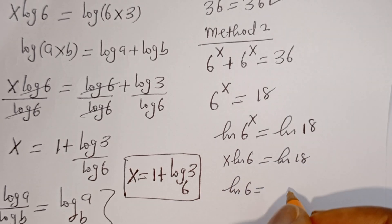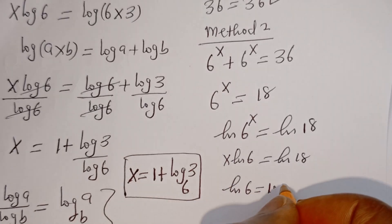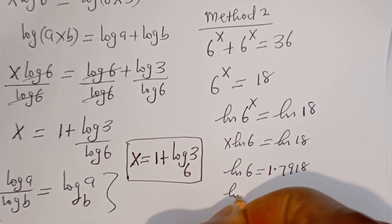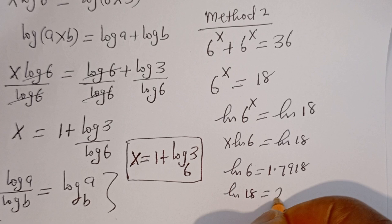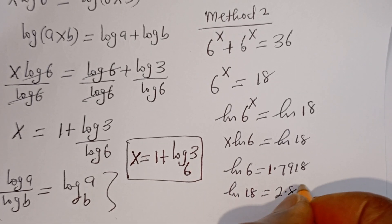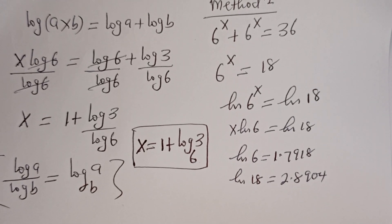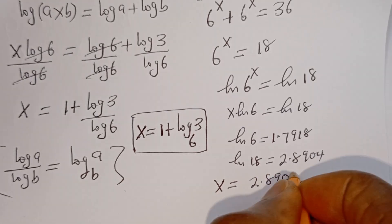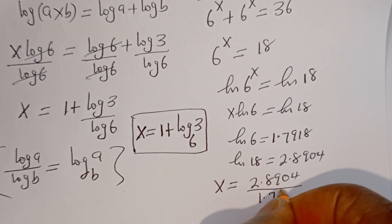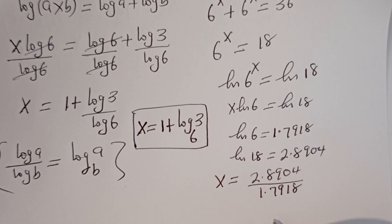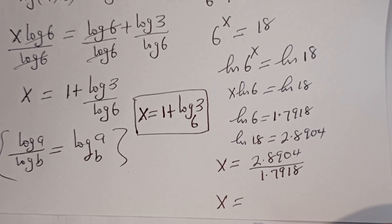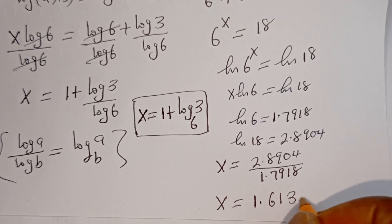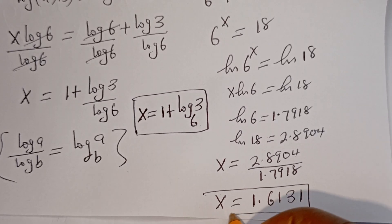Now, ln of 6 equals 1.7918 and ln of 18 equals 2.8904. So x equals 2.8904 divided by 1.7918, which gives x equals 1.6131. This is the final answer when using the natural log method.